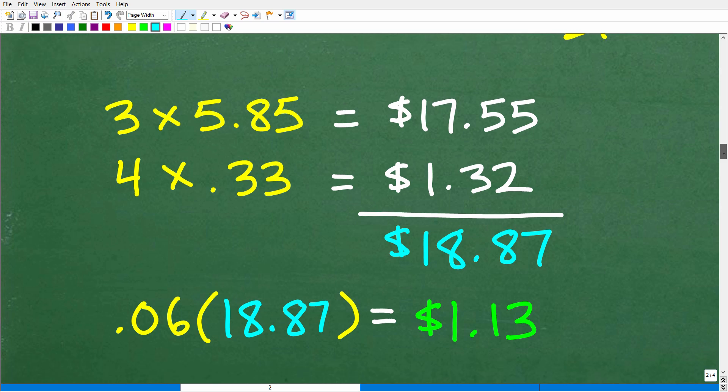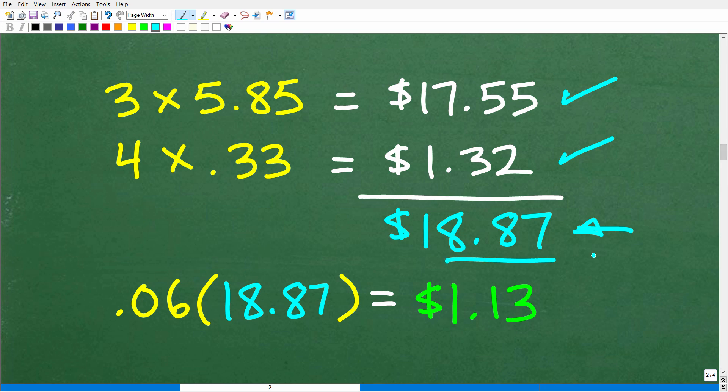Okay, so here is our calculation. So we have three items at $5.85. So that cost is $17.55 for those three items. Then we have four items at $0.33. So that's going to be 4 times 0.33. That's $1.32. So our subtotal here is $18.87. But, of course, we have to calculate the tax, which is going to be 6% of this. Okay, $18.87. So we have 0.06 times $18.87. And I'm kind of rounding off here. So I'm going to call it $1.13.